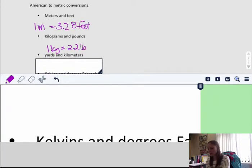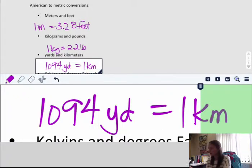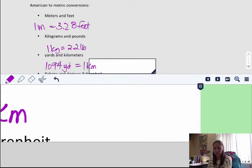Yards and kilometers. There are about 1,100 yards, or it's actually 1,094 yards in a kilometer. If you think it's 100 yards in a football field, you take 100 times 10, you're looking at about 1,000, you're looking at about 10 football fields as a kilometer.